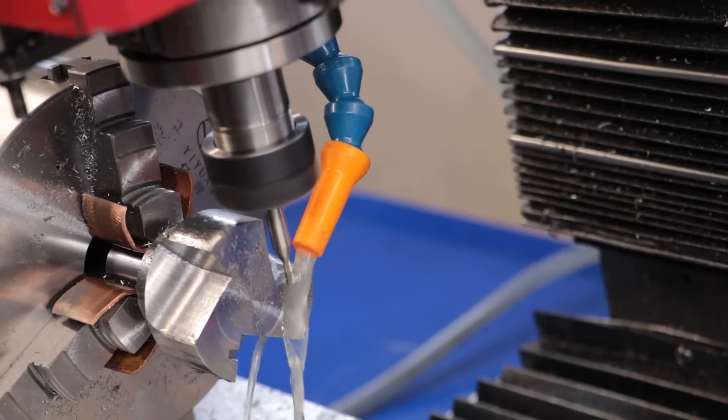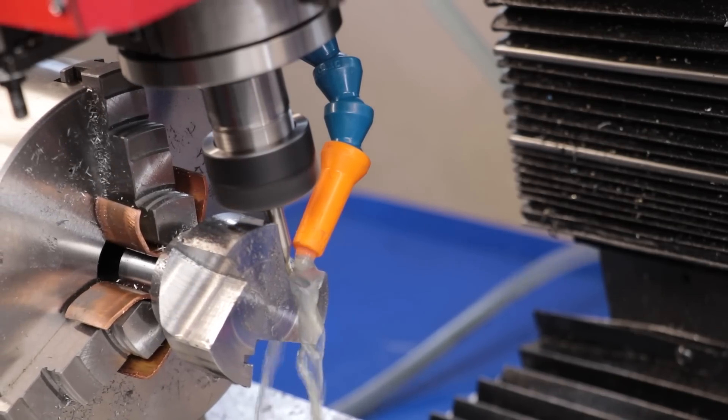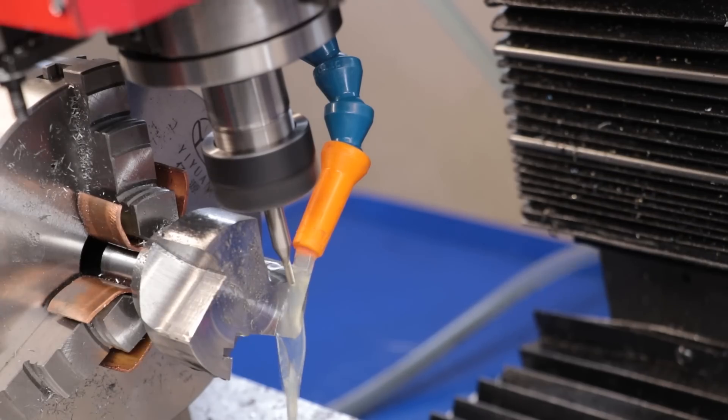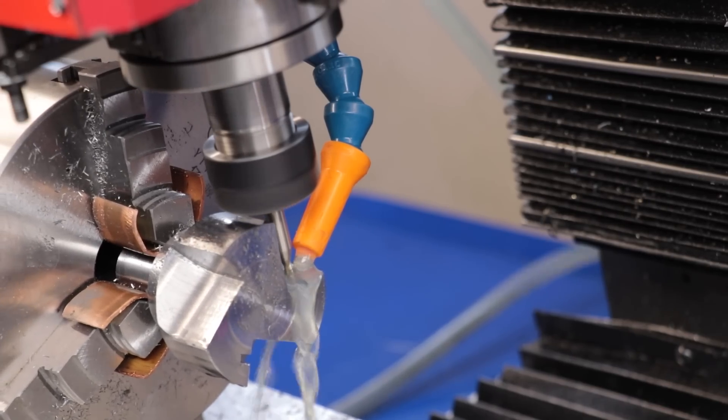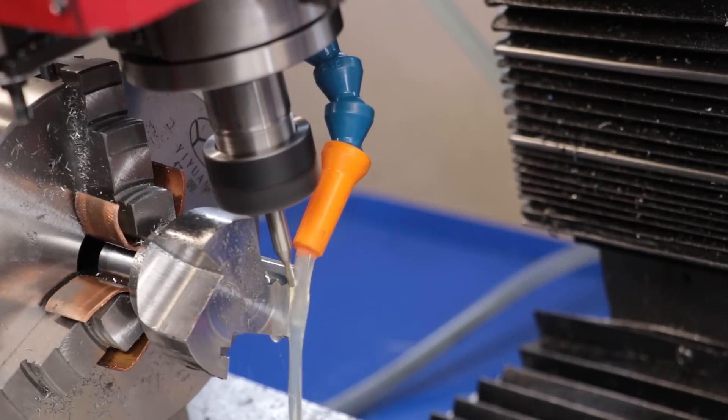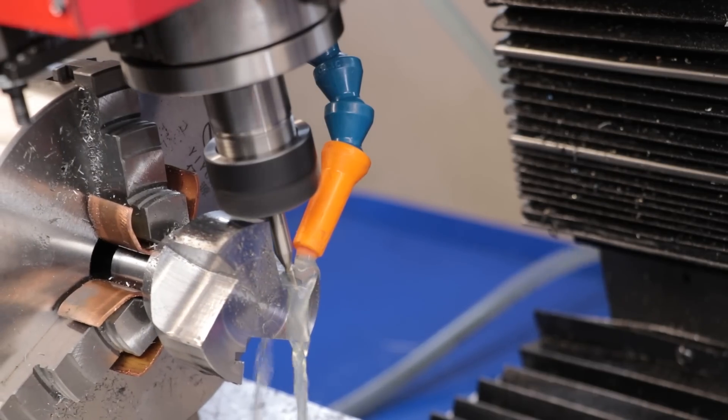The final thing left to machine is the pocket for that insert. And the first cut can be taken without changing the setup. I just need to be careful of the clearance between the tool holder and the part, of which there is a lot of clearance.